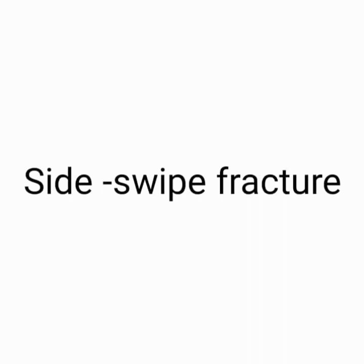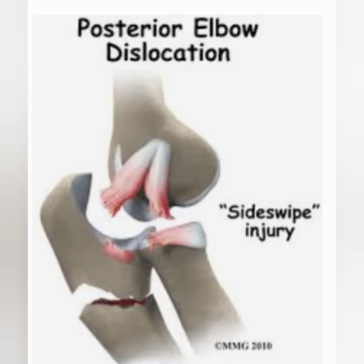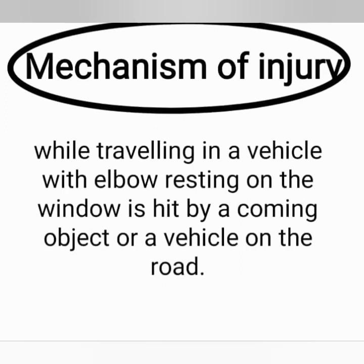Next is Sideswipe fracture, also called Baby car fracture. In this type of fracture, there is a fracture of the distal end of the humerus with fracture of the proximal end of the radius and ulna — see the diagram to identify the fracture. This is why we tell children not to put their hand out of the window or sit with their hand resting on a vehicle's window. While traveling, the elbow resting on the window is hit by an oncoming object or vehicle. Another cause may be a fall on a resting elbow or being hit by a solid object.